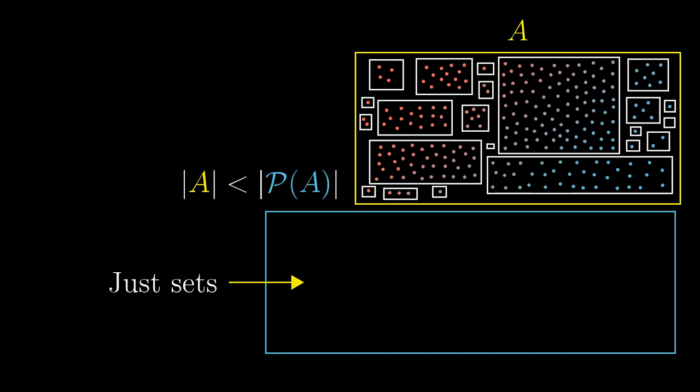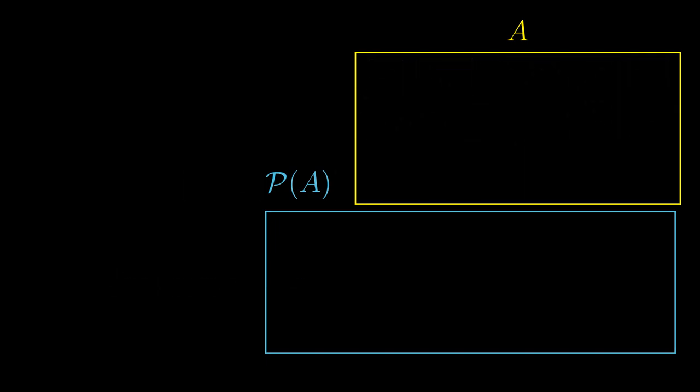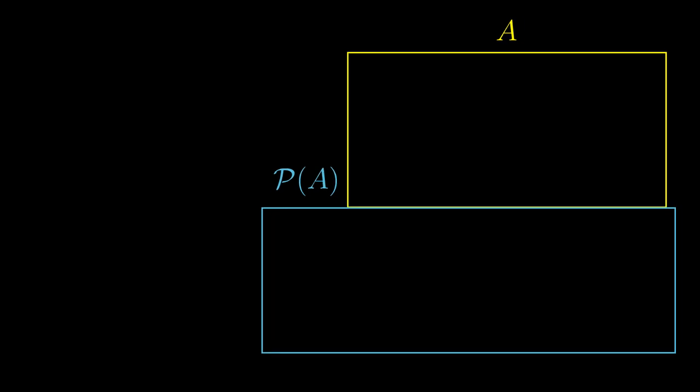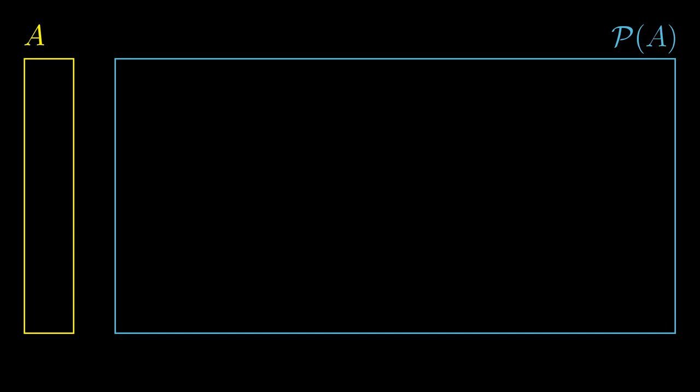So how have we actually proven that the power set must be larger than the original set? There could be something wrong with the proof.